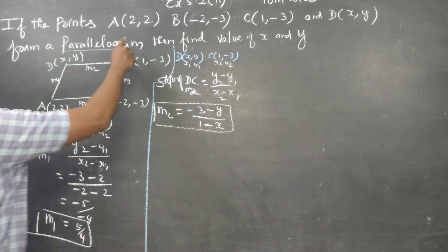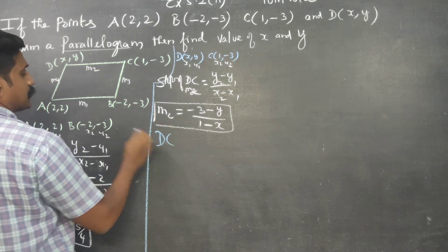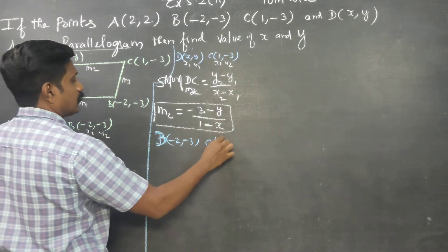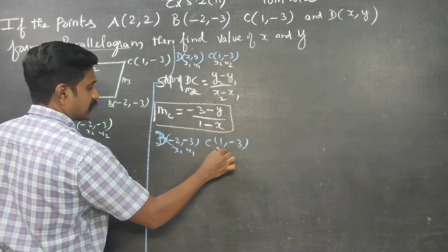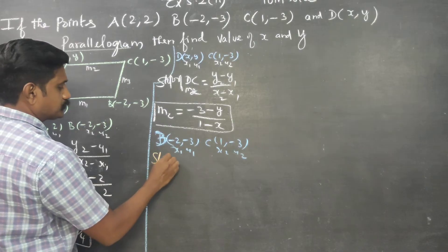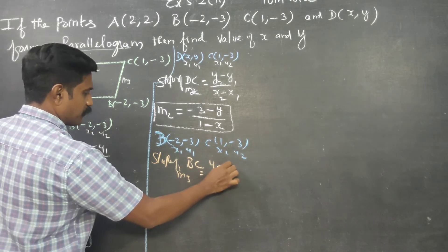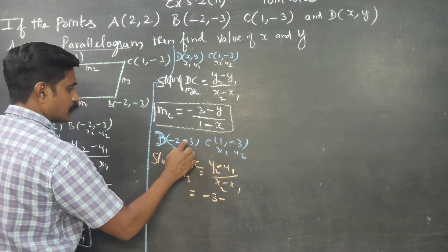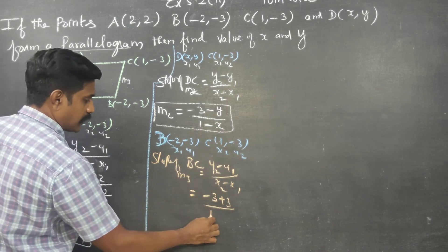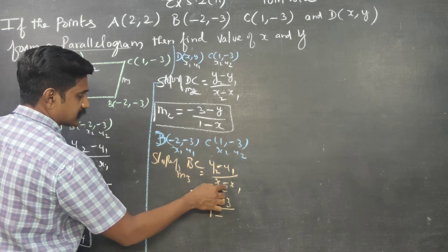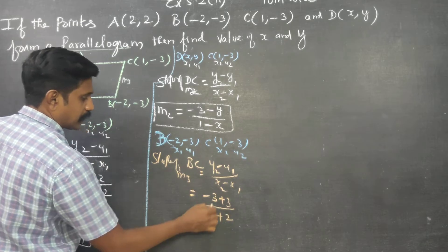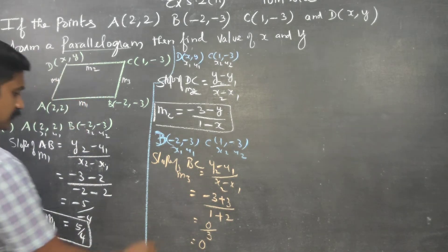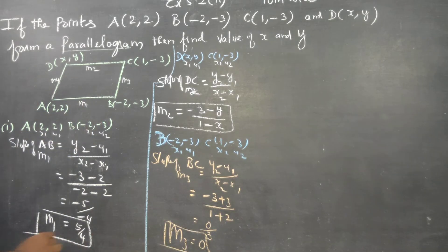M1 and M2 are ready. Now M3. B is (-2, -3) and C is (1, -3). This is x1, y1 and x2, y2. Slope of BC, M3. Formula: (y2 - y1) / (x2 - x1) = (-3 - (-3)) / (1 - (-2)) = (-3 + 3) / (1 + 2) = 0 / 3 = 0. M3 = 0.